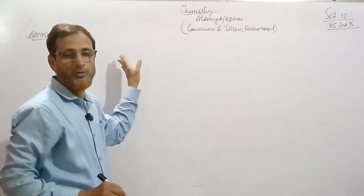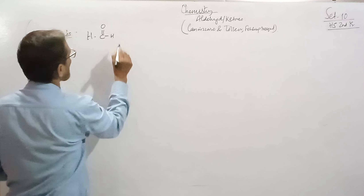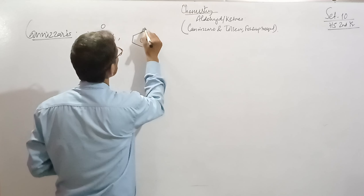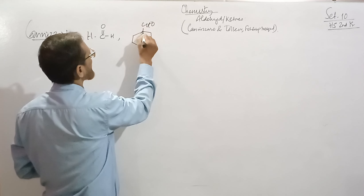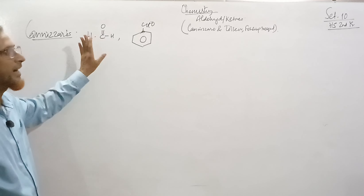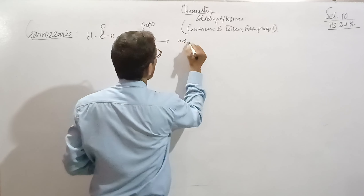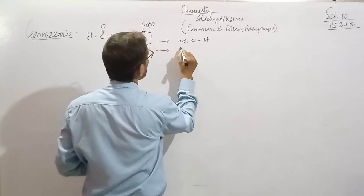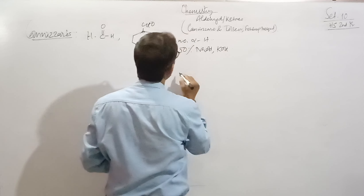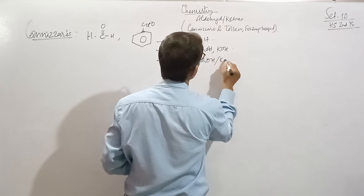The Cannizzaro reaction takes place with aldehydes having no alpha hydrogen. For example, formaldehyde has no alpha hydrogen. Benzaldehyde — this is Ph-CHO — and that carbon doesn't have any alpha hydrogen. These are examples where aldehydes with no alpha hydrogen undergo the Cannizzaro reaction.